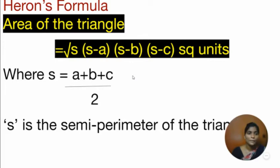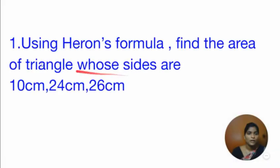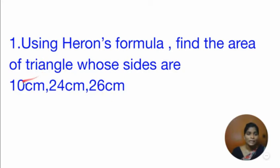We shall see one problem based on the formula. Using Heron's formula, find the area of a triangle whose sides are 10 cm, 24 cm, and 26 cm. We need to find the area of the triangle. Here, all the sides are different, so it is easy to calculate using Heron's formula.